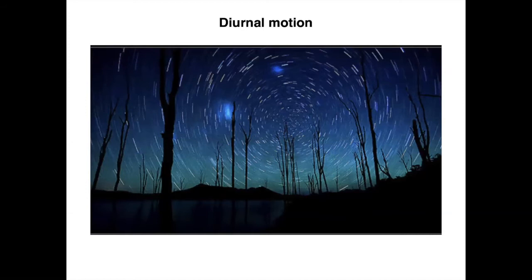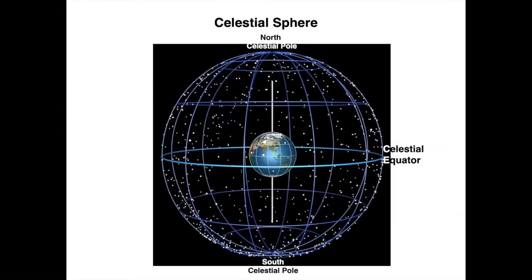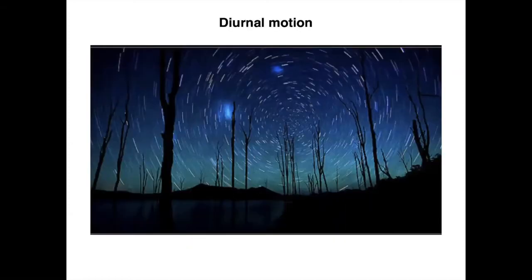We can start defining features on the celestial sphere. In the same way that on the Earth we have the equator and the poles, we can project these circles and points onto the celestial sphere — giving us the celestial equator, the north celestial pole, and the south celestial pole. The celestial equator is a projection of Earth's equator, and Earth's rotation axis meets the celestial sphere at the north and south celestial poles, which appear to be the points about which the stars rotate in their diurnal motion.